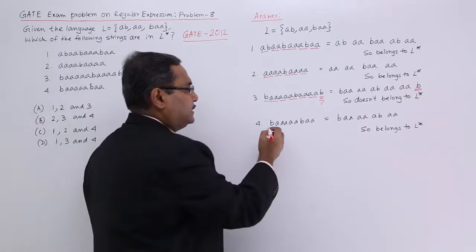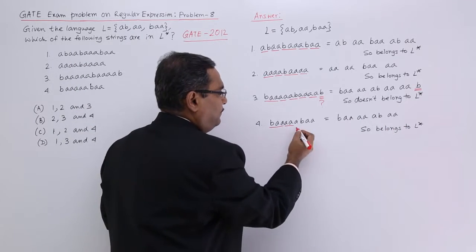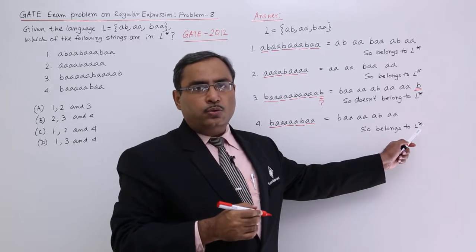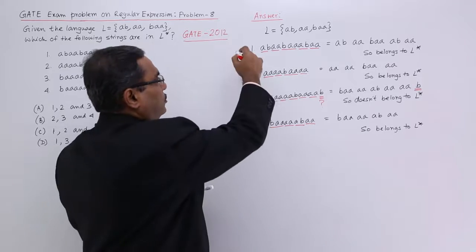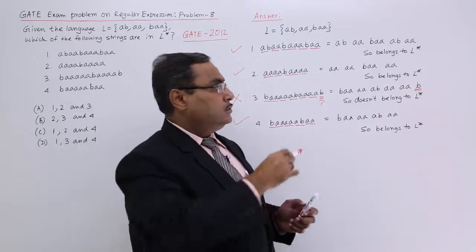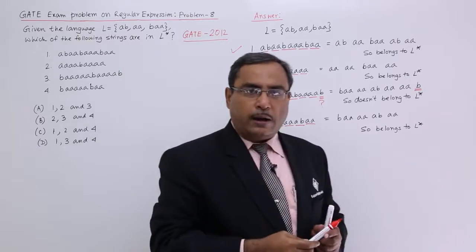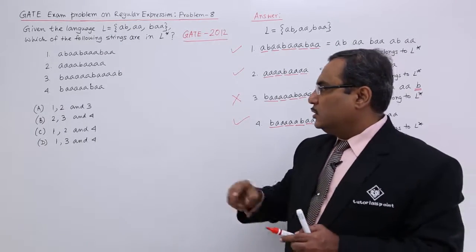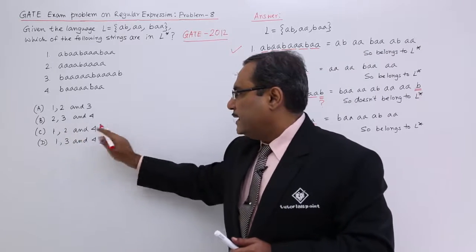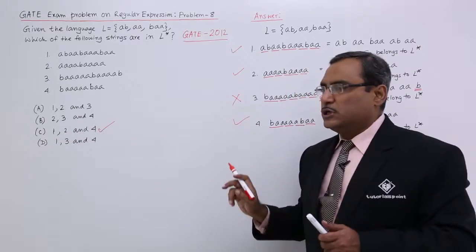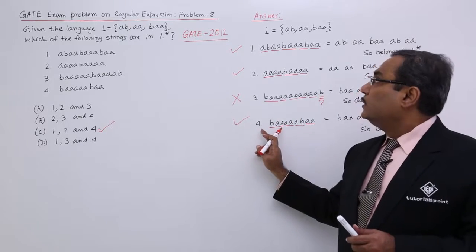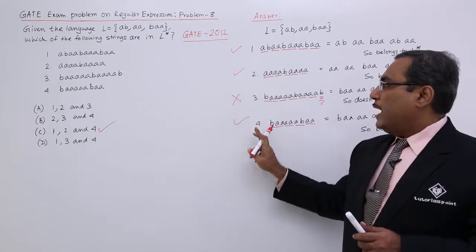In this case we are having BAAAA AB and AA — so it is belonging to L star. Strings 1, 2, and 4 are belonging to L star. My answer will be option number C, which is the correct answer because it covers strings 1, 2, and 4.